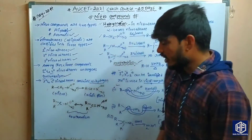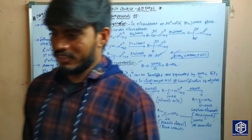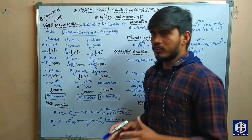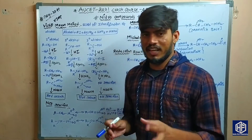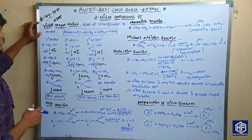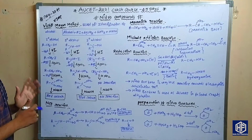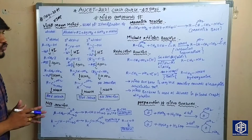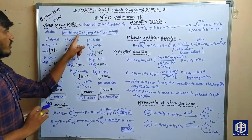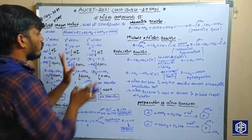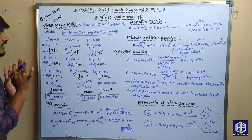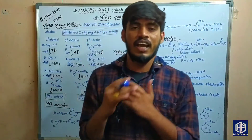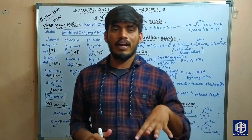Now coming to the next concept in nitro compounds. One of the important reactions from our examination point of view is the Victor Meyer method. The Victor Meyer method is used for the identification of alcohols — primary, secondary, and tertiary alcohols. I will show you the identification of these nitro compounds and alcohols.